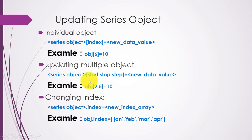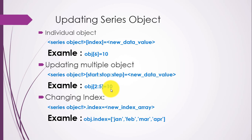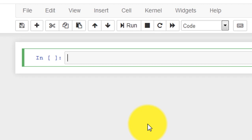Python also provides a facility to update multiple items in one go in one statement. The syntax is: series_object[start:stop] = new_data_value. For example, obj[2:5] = 10, so index values 2, 3, and 4 will all have the value 10. We can also change the index by setting the index attribute equal to a new index array, but the new array must contain the same number of elements as the Series.